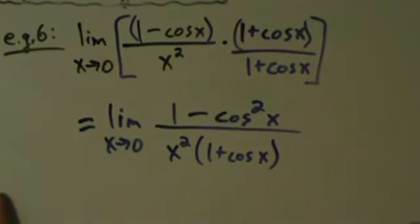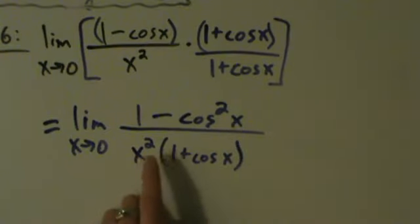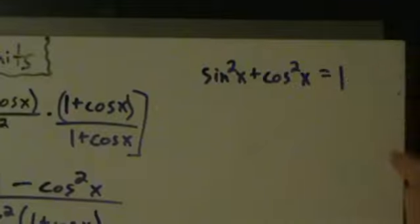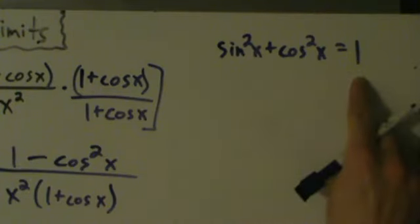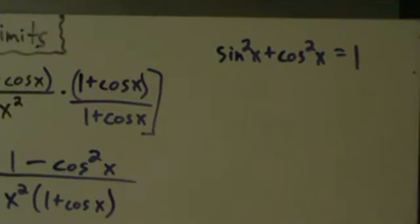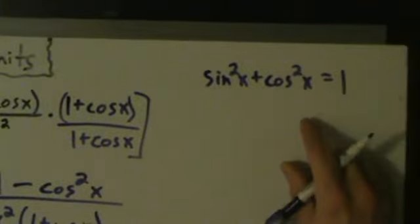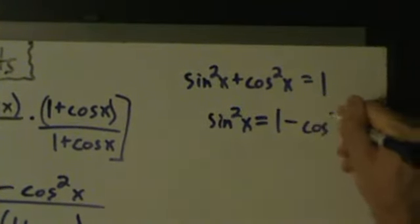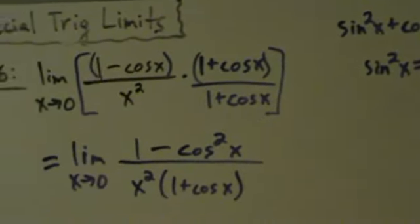Now we need to think about trig identities. We have the limit as x approaches 0 of 1 minus cosine squared of x divided by x squared times 1 plus cosine x. Remember the identity: sine squared of x plus cosine squared of x equals 1. Rearranging, sine squared x equals 1 minus cosine squared x. So 1 minus cosine squared x is the same thing as sine squared x.